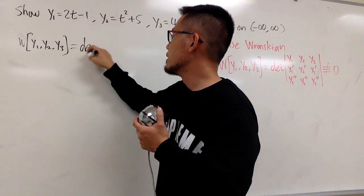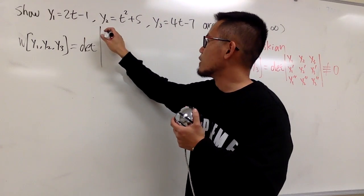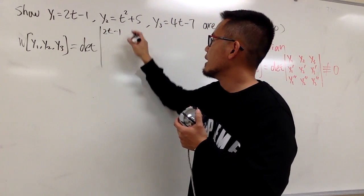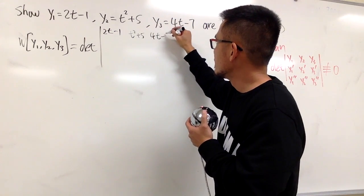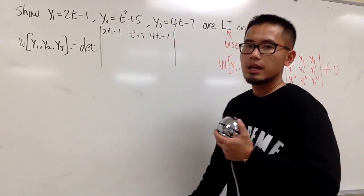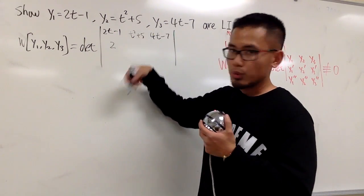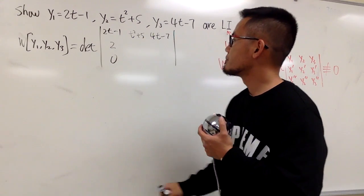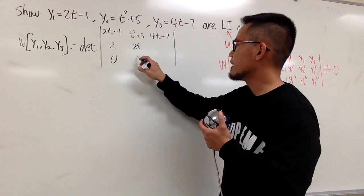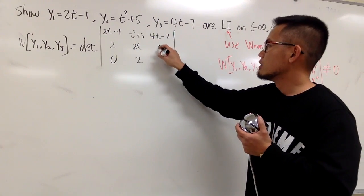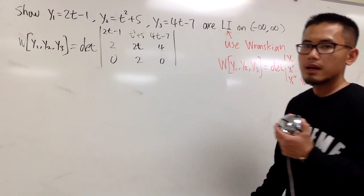Which is going to be a determinant of a three-by-three matrix. The first function is 2t minus 1, the second function is t squared plus 5, the third one is 4t minus 7. Differentiate this. This is going to give me 2, and I will do it again, which is going to be 0. This is 2t, and then differentiate that again, which is 2. This derivative is 4 and a 0.